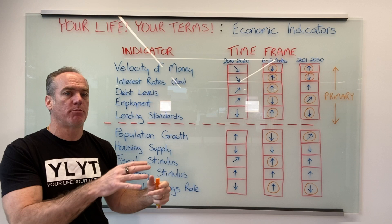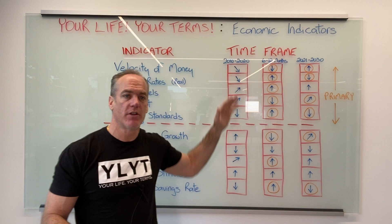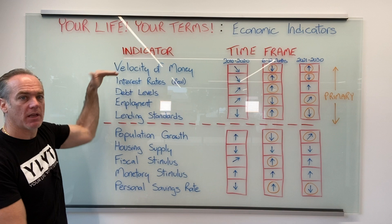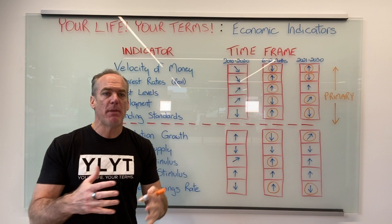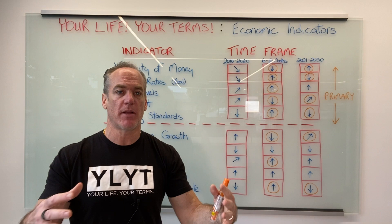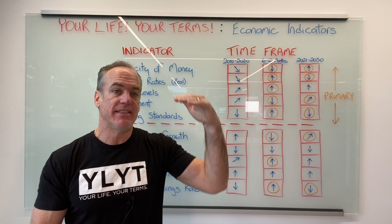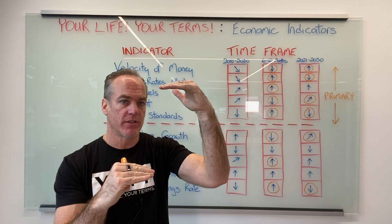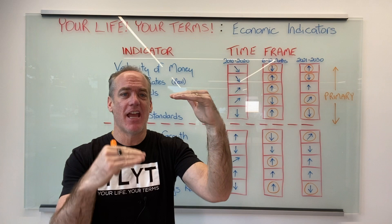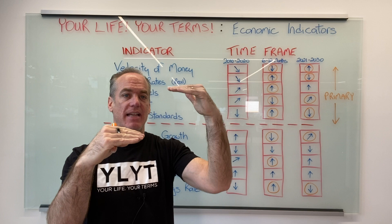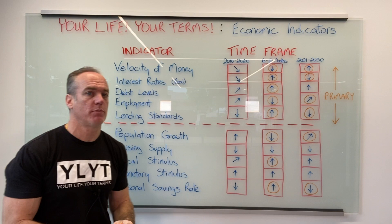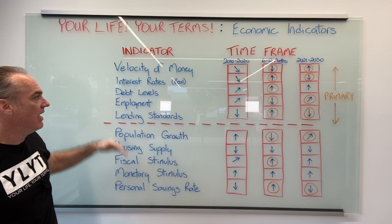I'm going to focus on the top five indicators. If you want a worksheet for these, there's a link in the description where you can grab a PDF version. The top five indicators are: the velocity of money, interest rates, debt levels, employment, and lending standards. The velocity of money is the movement of money in the economy. In a debt-based money system, you really want money to be moving for the economy to grow.